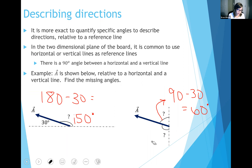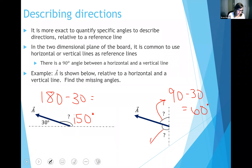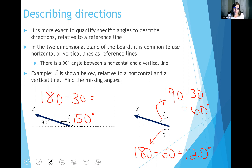Now let's find the other angle labeled with a question mark in this figure. Falling back on the same logic — a straight line makes 180 degrees — the vertical line makes 180 degrees total. If the angle we just found was 60 degrees, then this remaining angle is 180 minus 60, which gives us 120 degrees. There are other geometry methods to get the same answers, but you should arrive at the same results.